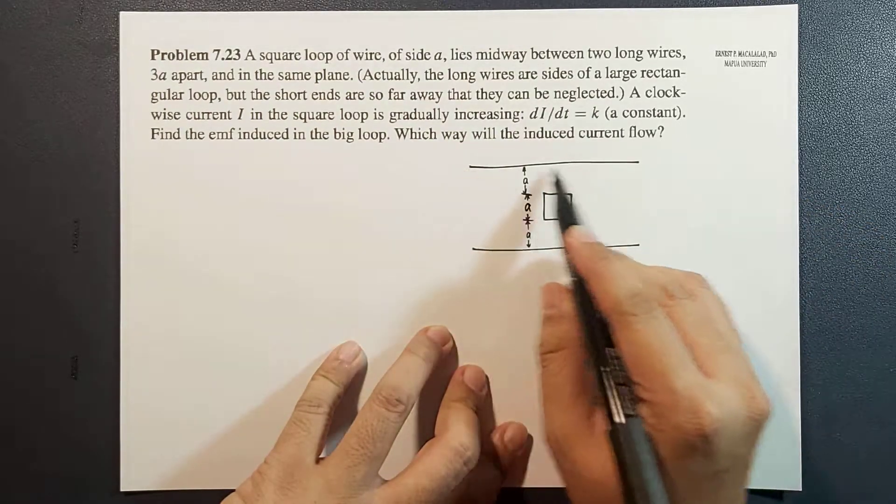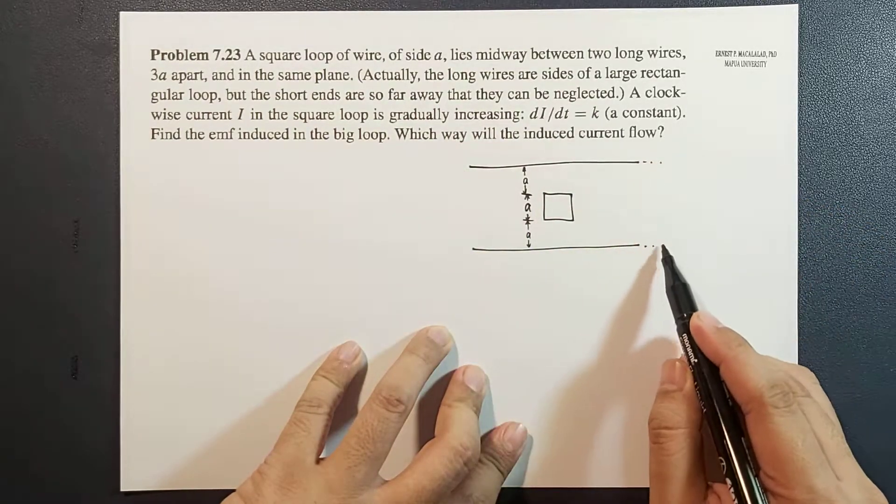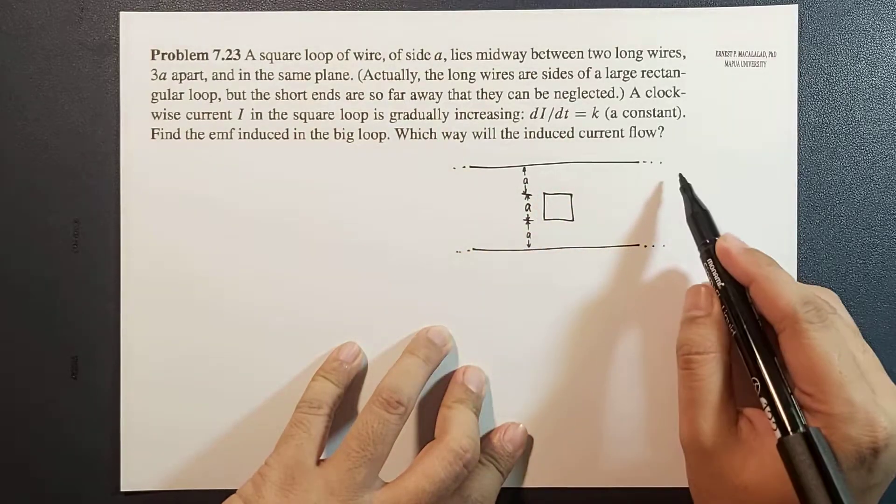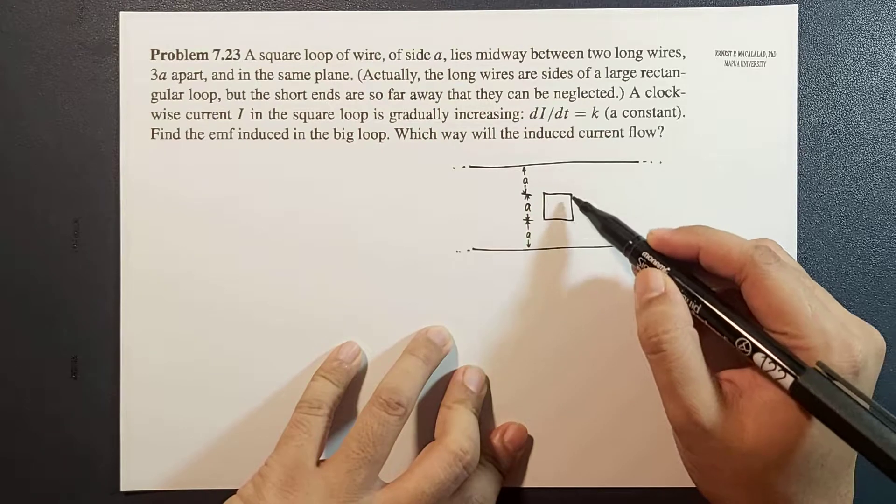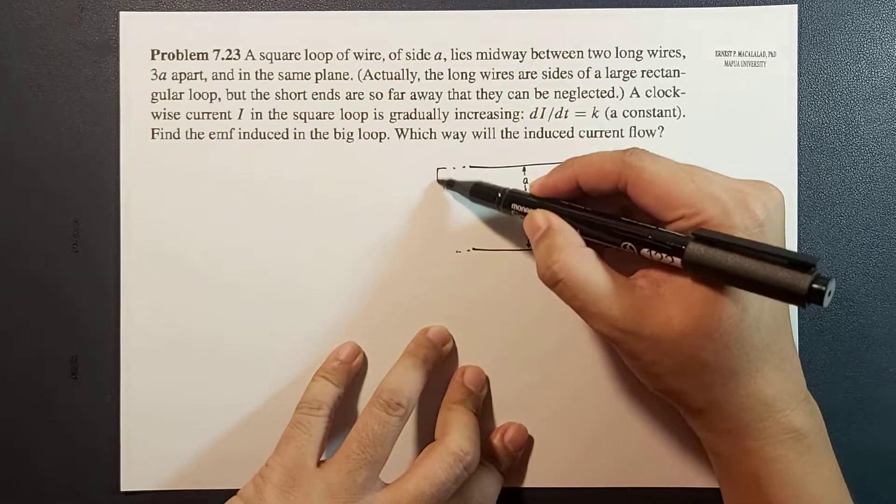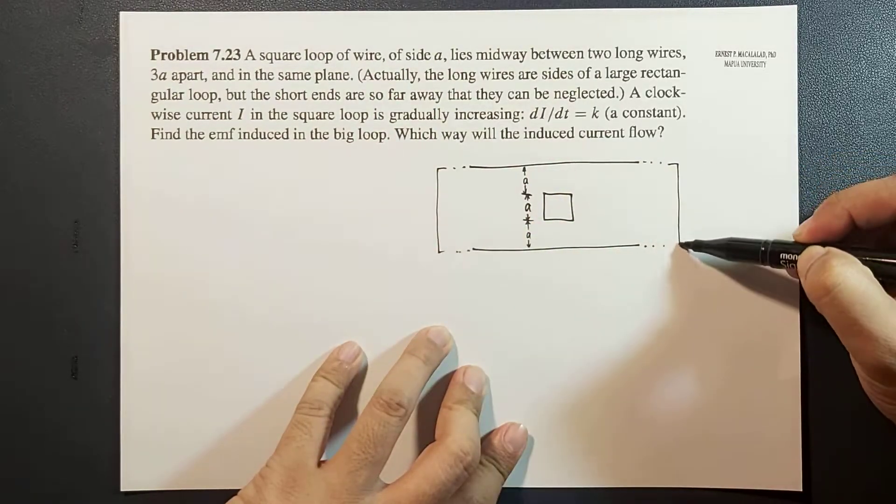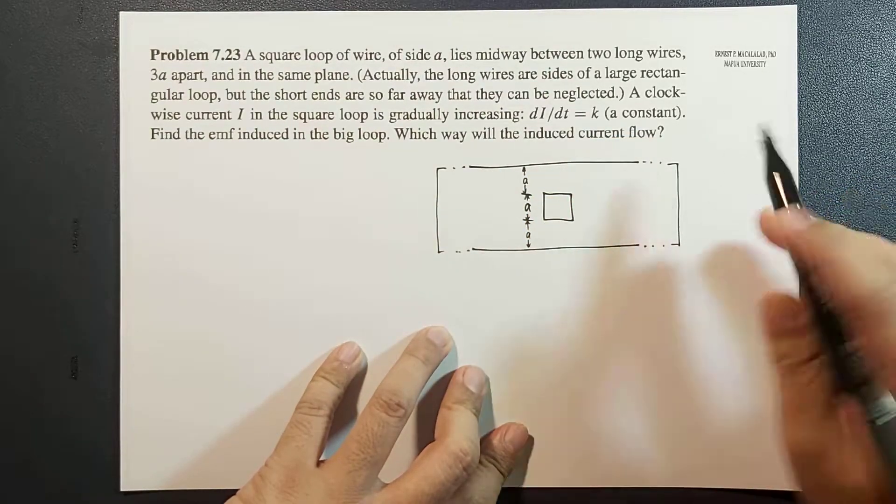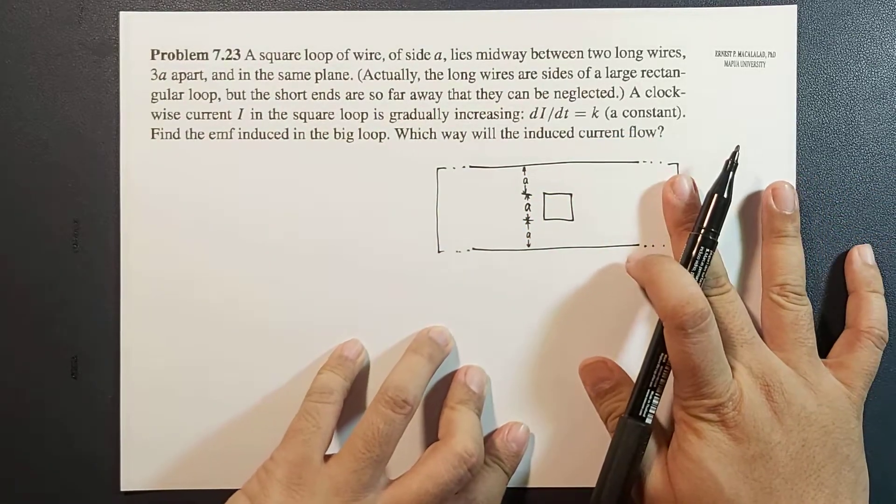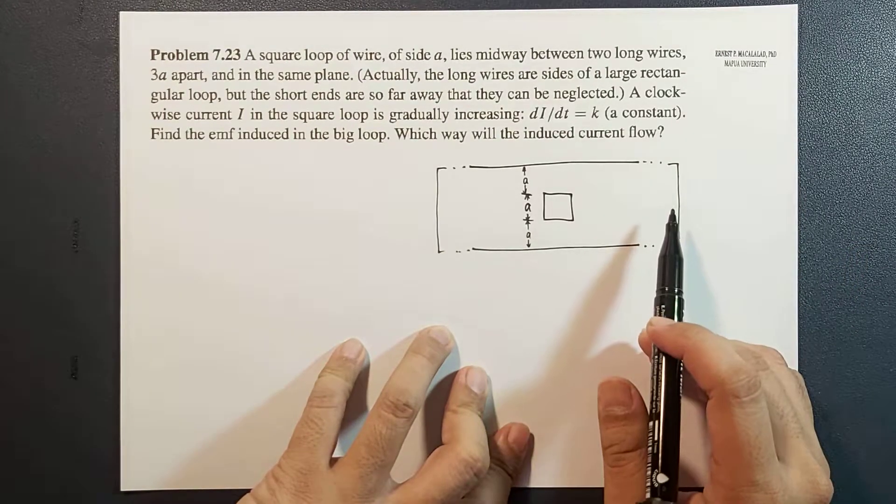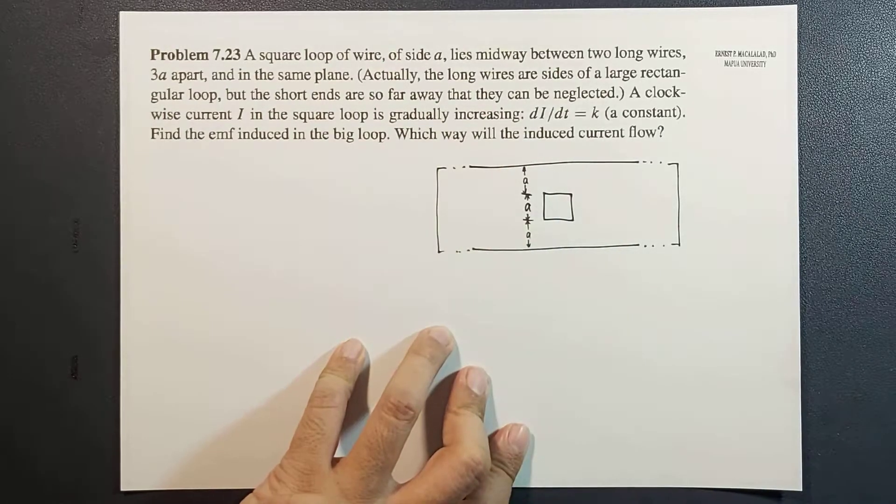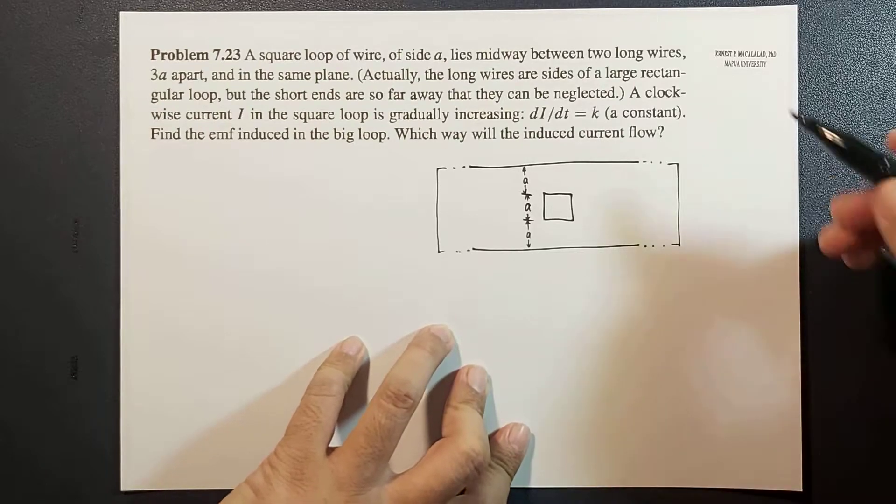We are going to consider this to be infinity long wire relative to this square loop, so that these two sides of this long rectangular loop will not affect our calculations, aside from the fact that it will help us determine the direction in which the induced current flows.